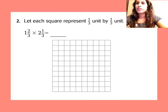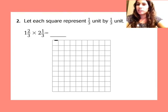Let each square represent one-third of a unit by one-third unit. So each little square right here is one-third by one-third. All the sides are one-third in length.